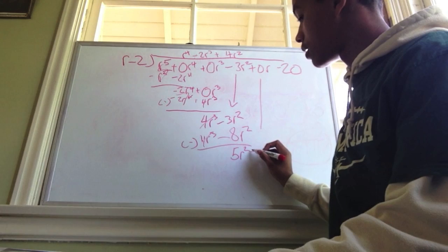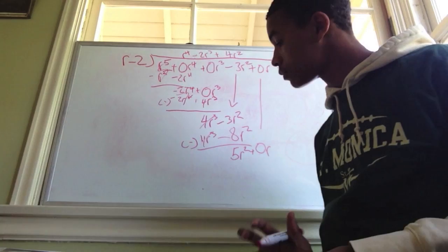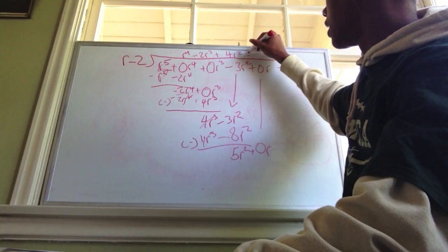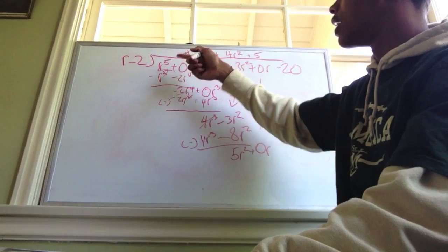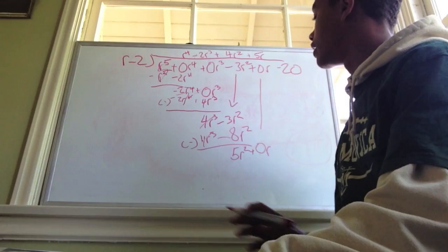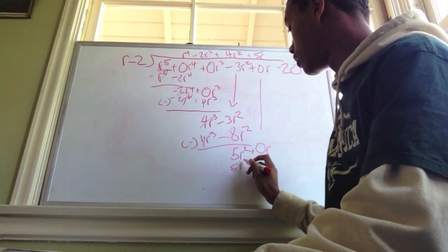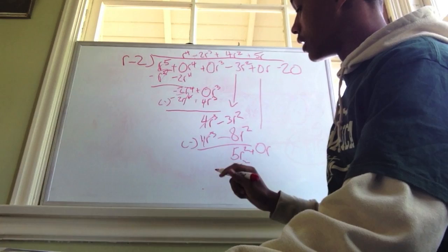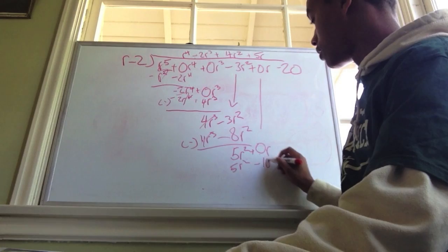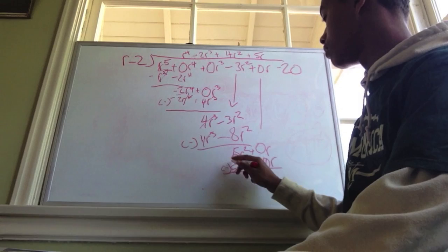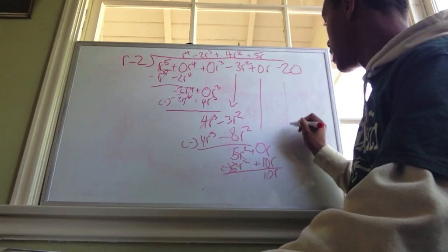Bring down the plus 0r. Now you have 5r squared plus 0r. How do we get to 5r squared? You need 5r — because r times r equals r squared. So put plus 5r at the top. 5r times r gives 5r squared, and 5r times negative 2 gives negative 10r. Once you get here, flip the sign so it becomes positive. That cancels out and gives you 10r.